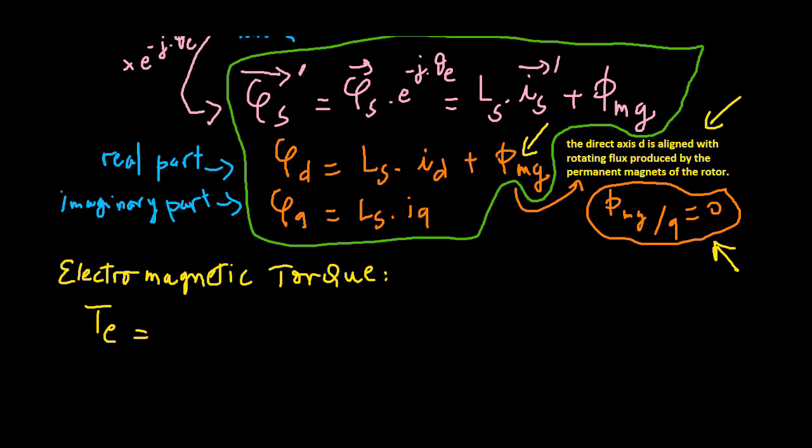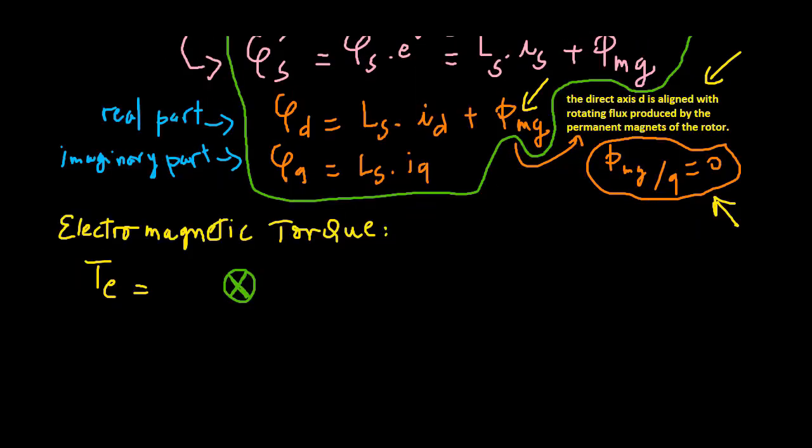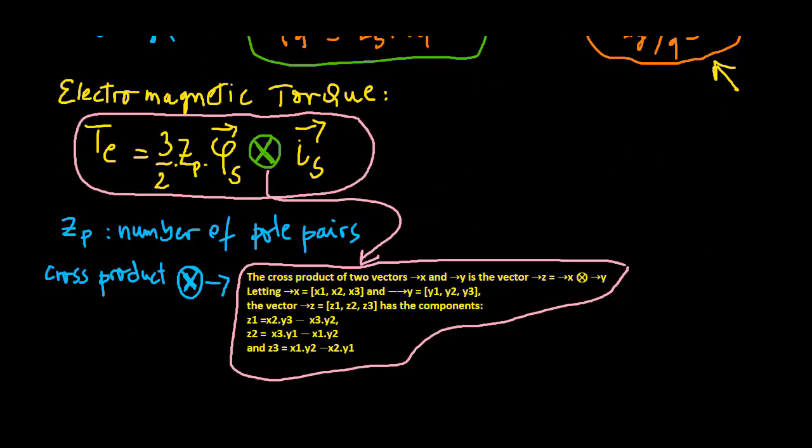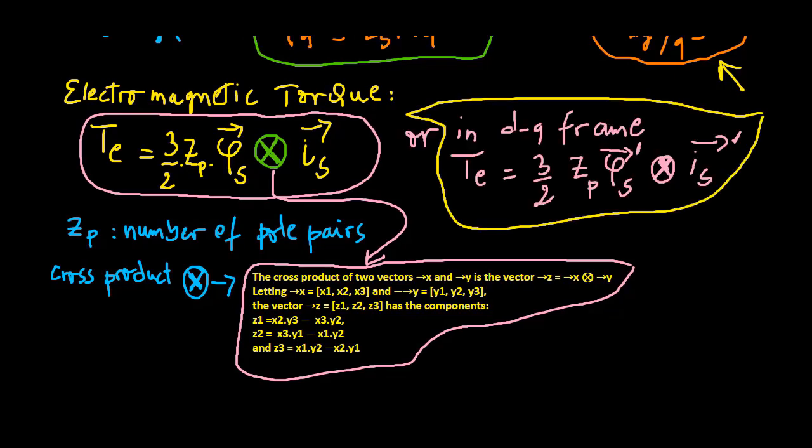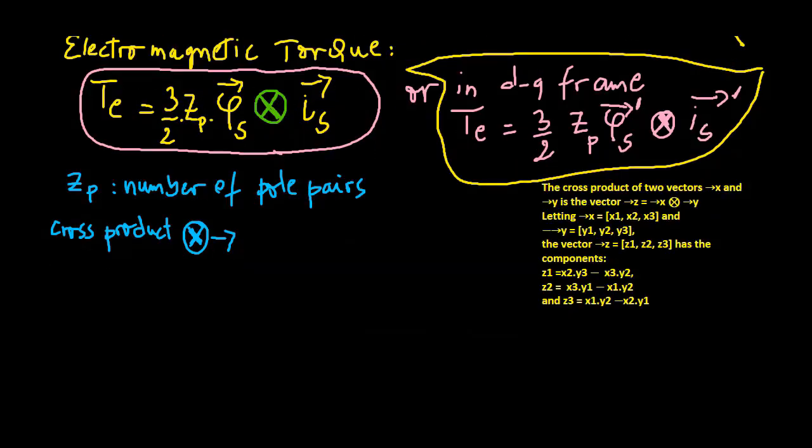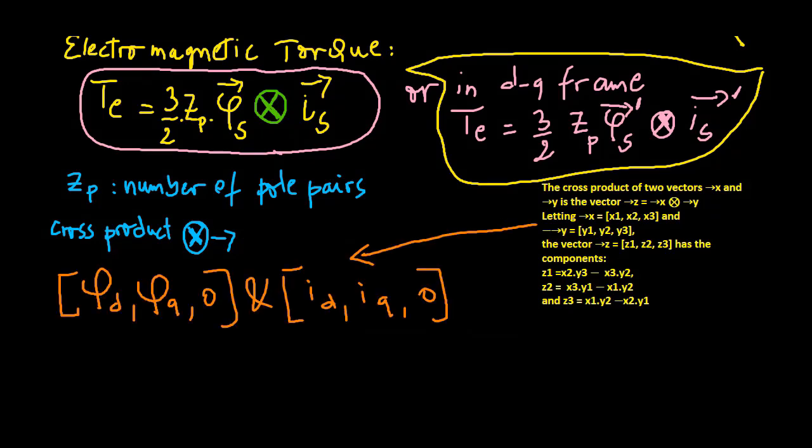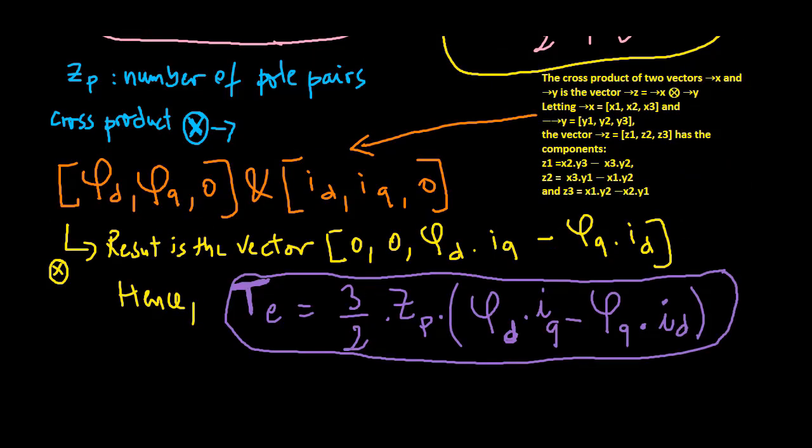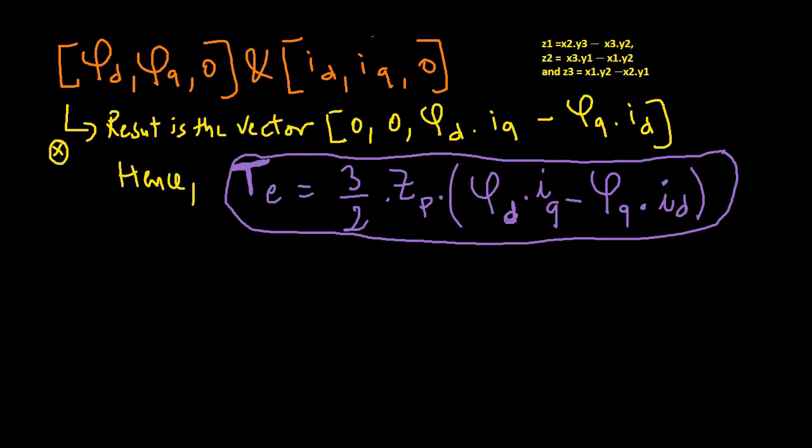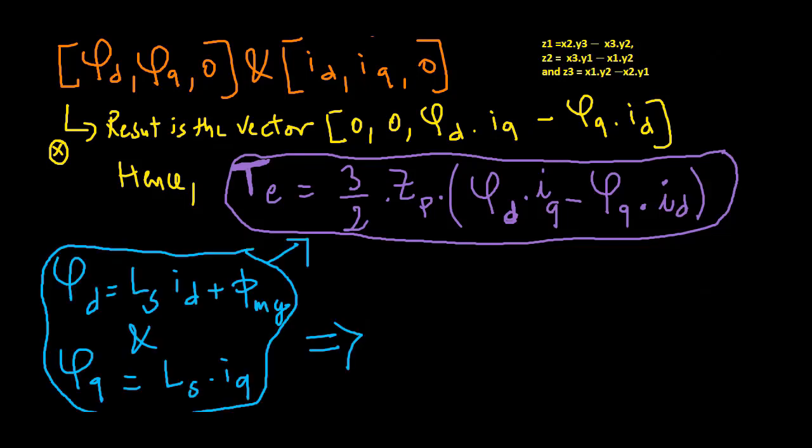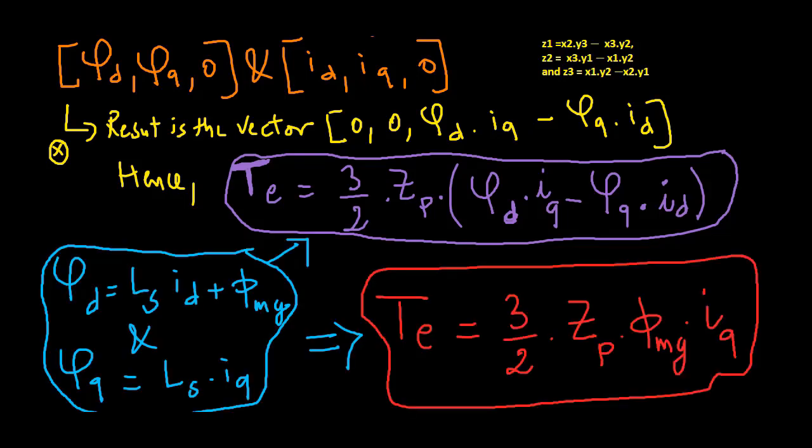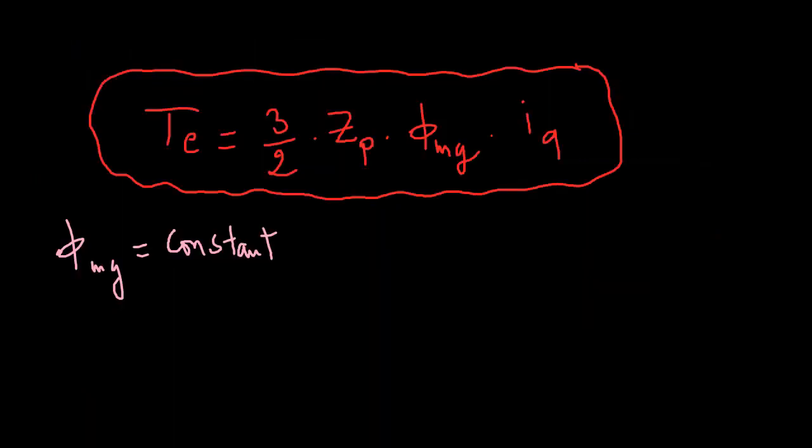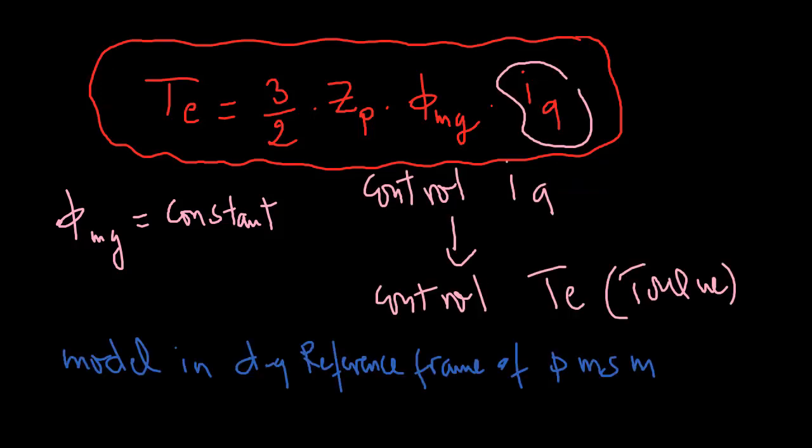Electromagnetic torque is computed as the cross product of the space vector of the stator flux with stator current in the alpha beta reference frame, or equivalently in the DQ reference frame. The cross product is calculated using two three dimensional vectors. By substituting these equations, we obtain. If the flux of permanent magnet assumed to be a constant, the electromagnetic torque can be controlled through varying the Q axis component of stator currents.